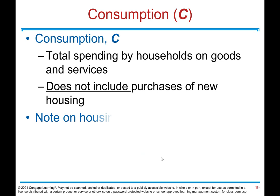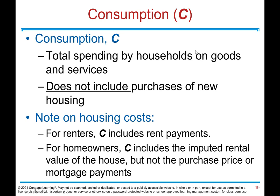Consumption, or C, is total spending by households on goods and services. It does not include purchases of new housing. For renters, C includes rent payments. For homeowners, C includes the imputed rental value of the house, but not the purchase price or mortgage payment.